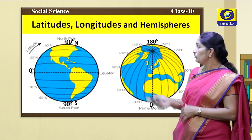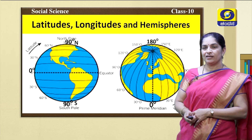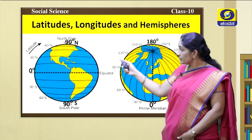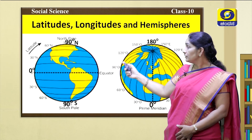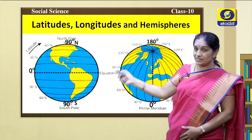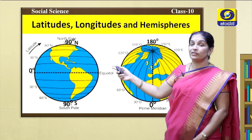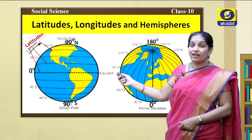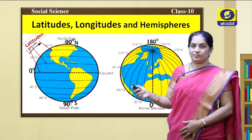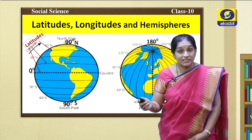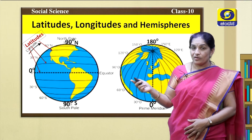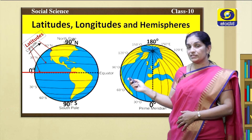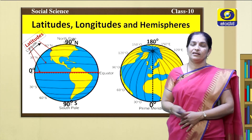Children, look at this picture. This is the picture of a globe. In this picture, you are observing the horizontal lines which are parallel to each other. These lines are called latitudes. Latitudes are imaginary lines which are drawn on the globe for our study purpose. This is 0 degree latitude.